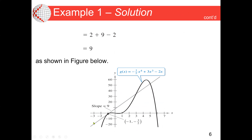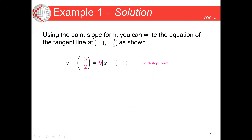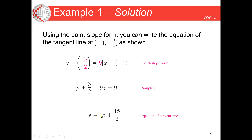Now we have our slope. The point is (−1, −3/2) and the slope is 9. We use the point-slope form: y minus y₁ equals m times (x minus x₁). With x₁ and y₁ equal to −1 and −3/2, and slope 9, we substitute and simplify. We get y plus 3/2 equals 9x plus 9, which simplifies to y equals 9x plus 15/2, by moving the 3/2 to the right side.